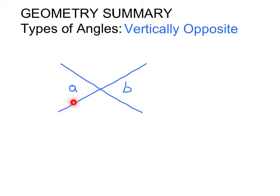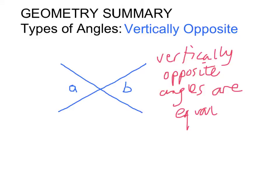Where two straight lines cross, the angles opposite each other are vertically opposite. Vertically opposite angles are equal.